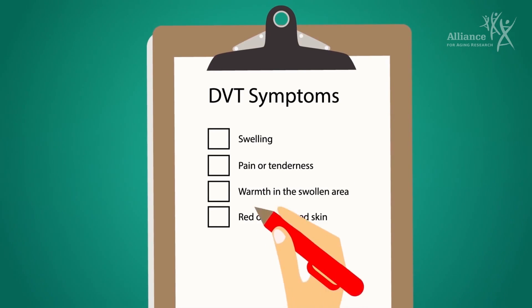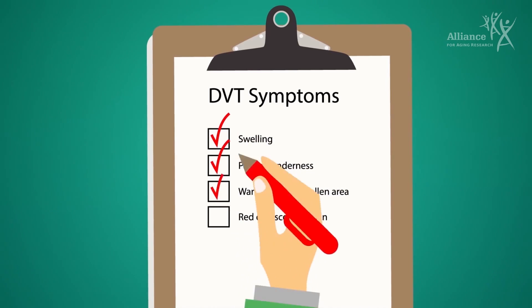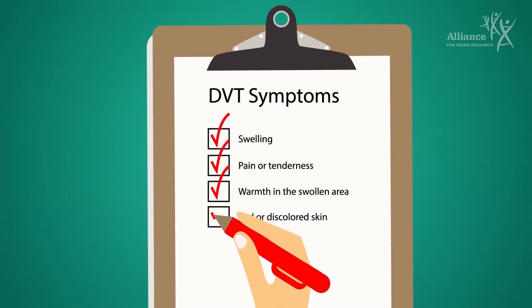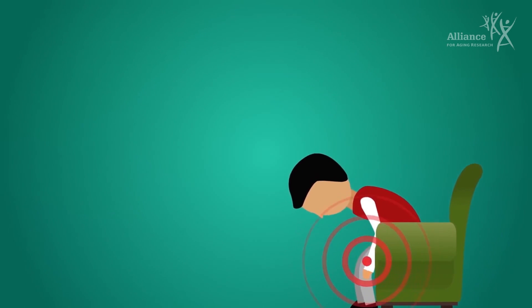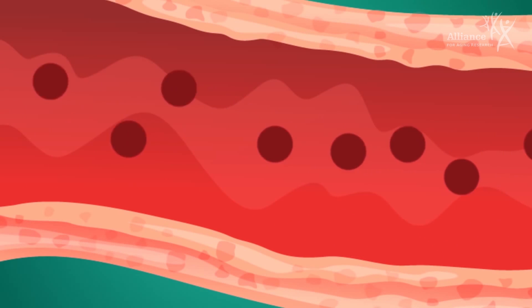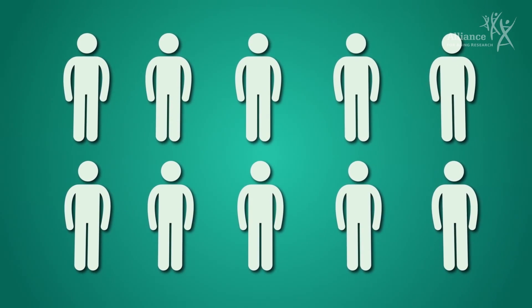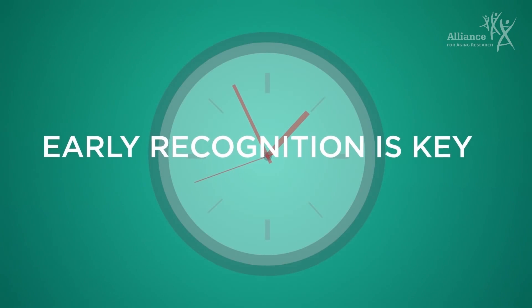If you experience any of the following symptoms of DVT, see a healthcare professional right away: swelling, pain or tenderness, warmth in the swollen area, or red or discolored skin. DVT can cause long-term symptoms such as pain and swelling in some people. However, the biggest risk with a DVT is that the clot breaks free and leads to a pulmonary embolism. If left untreated, at least 1 in 10 people who have a PE will die within 30 days, so early recognition is key.